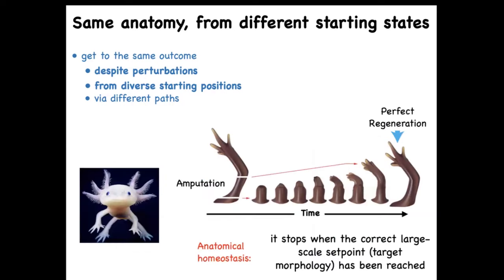Here's another example. A creature like this — an axolotl — regenerates its legs, eyes, jaws, portions of its heart and brain, ovary, spinal cord, and so on. If you amputate anywhere along the limb, the cells very rapidly build exactly what's needed and then stop. The most amazing part is not only that it regenerates no matter where you cut, making exactly what's needed — no more, no less — but that it ever stops. It stops when a correct salamander arm is completed. This is a navigation policy in anatomical space — an error minimization scheme where errors become corrected over time.